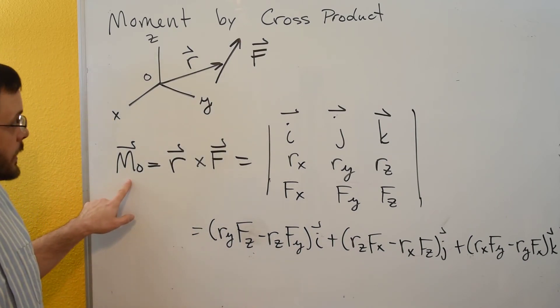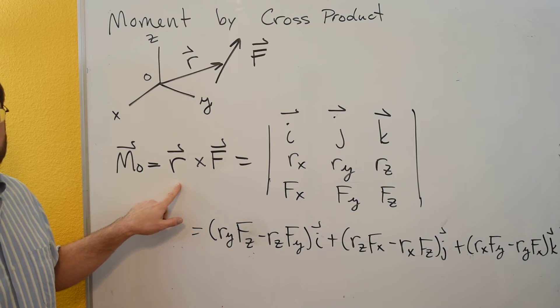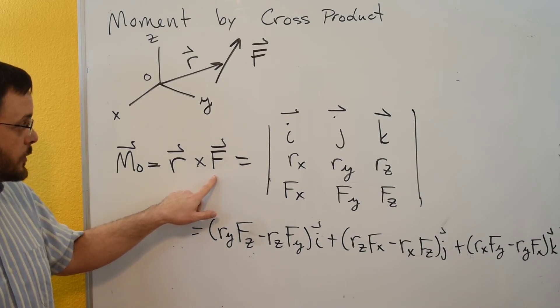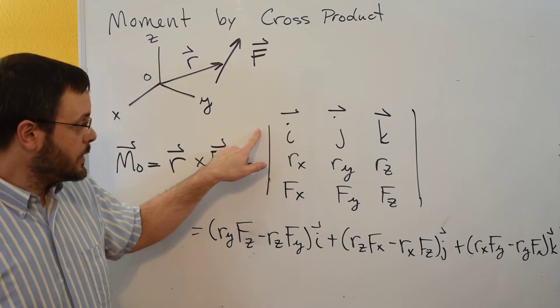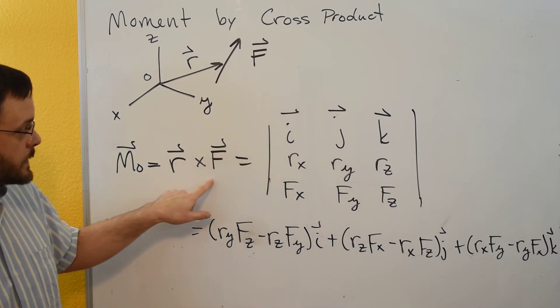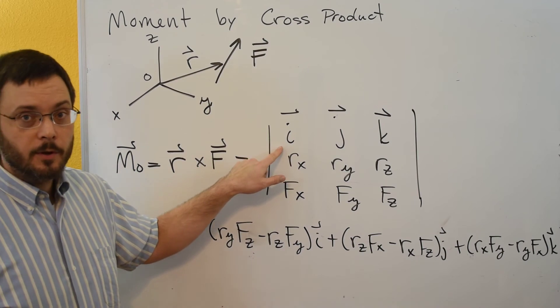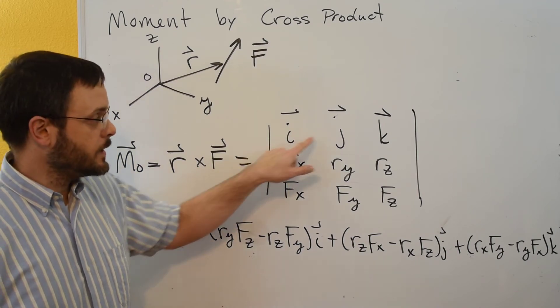The moment about O is given by the cross product of the position vector cross the force vector, and you can evaluate this as a determinant. This would be R cross F, so the top row of the determinant would be the unit vectors i, j, and k.